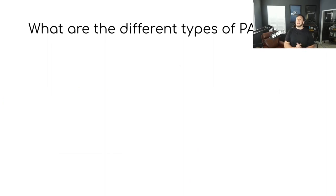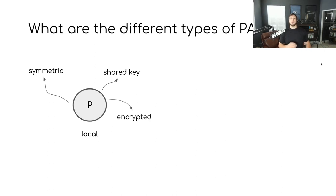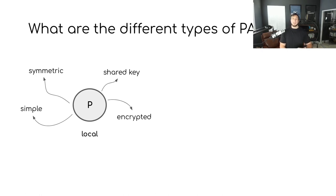Next, let's talk about the different types of PASETOs. The first type is called a local PASETO. These are sometimes referred to as symmetric or shared key PASETOs because of the type of cryptography they use. One important thing to know about local PASETOs is that they are always encrypted — if an attacker gets a hold of one but doesn't have the necessary password or key to decrypt it, they won't be able to see any of the JSON data inside. Local PASETOs are the simplest and most commonly used type. If you're familiar with JSON web tokens, this might sound similar to an encrypted JWT.